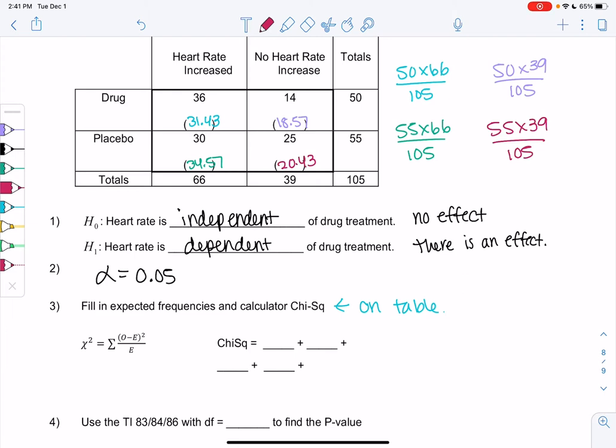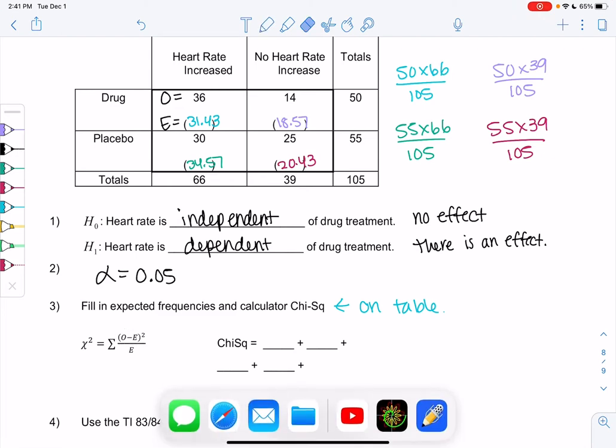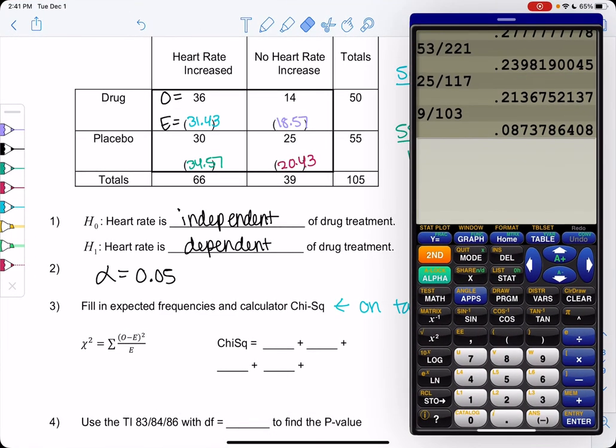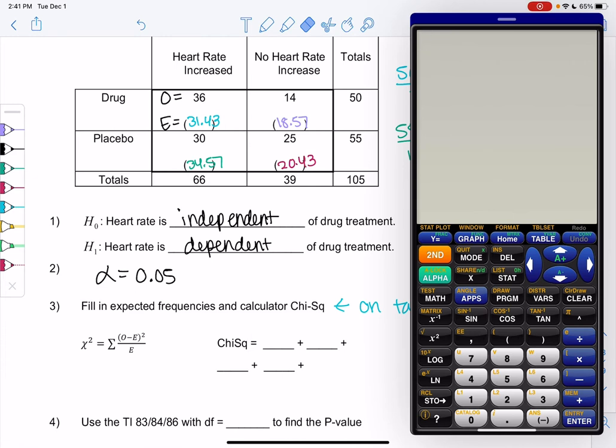So let's go ahead and find our chi-square values. So we're going to do observed, which is the top number, and expected is the bottom number. We're going to subtract, square, and divide. So I'm just going to go top left over, and then go to the bottom row. So the top left, we get 36 minus 31.43 squared, all over 31.43. This is the tedious step. And we get 0.664.